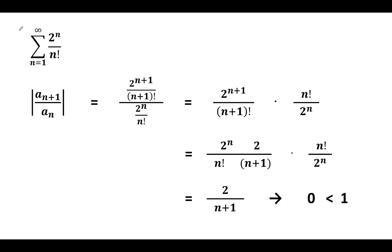Here's an example. We'll be testing this series for absolute convergence using the ratio test. Let's call this element a_n. We'll be looking at the ratio between a_{n+1} and a_n. The absolute value function is not needed here because all elements are positive. This is a_{n+1} and this is a_n. To divide this fraction by that one is to take the top and multiply by the reciprocal on the bottom.